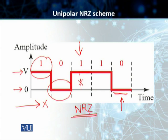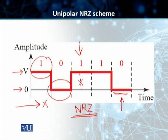Unipolar non-return to 0 scheme. Students, in this particular scheme, the normalized power — the power needed to send 1 bit per unit of line resistance — is very high. In further schemes, the power required is way lower than the unipolar non-return to 0 scheme. For this reason, the scheme is normally not used in data communication anymore, but it is the most basic of the line coding schemes. It is important to understand this scheme in order to understand the further, more advanced schemes.